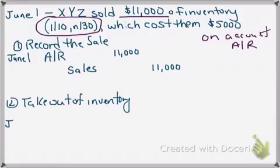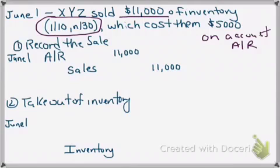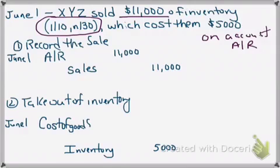Next we want to take it out of inventory. This is also a June 1st entry. If we are decreasing inventory, inventory is an asset, so that means it is going to be our credit account. The credit account would be inventory for five thousand dollars — that's what we paid for this inventory and that is what we take out. The debit account is a new account called cost of goods sold. Cost of goods sold is a type of expense account — it's the rarity in that it doesn't include the word 'expense.' So the entry is: cost of goods sold debit five thousand, inventory credit five thousand.